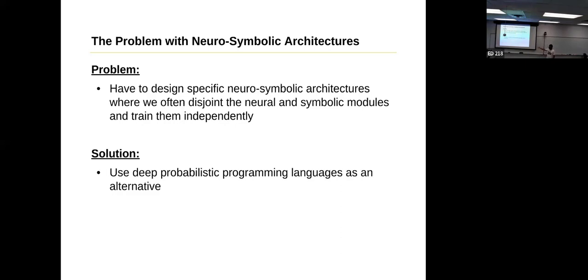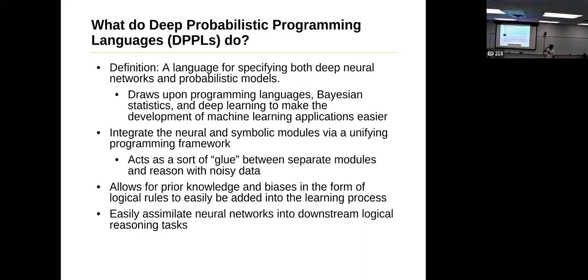Well, the solution is to use deep probabilistic programming languages (DPPLs). The definition of DPPLs is that it's a language where you specify both deep networks and probabilistic models, drawing upon programming languages and deep learning. Integrating these neural modules is done by making a unifying program network. You can think of DPPLs as kind of like a glue between several separate modules. You can also reason with noisy data. Additionally, you can allow prior knowledge, biases, and formal logical rules to be easily added into the learning process, as well as assimilating neural networks into downstream logical reasoning tasks.